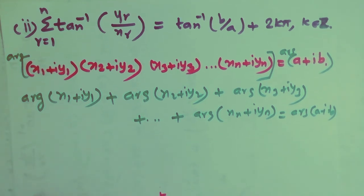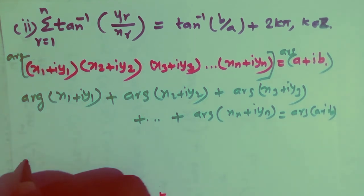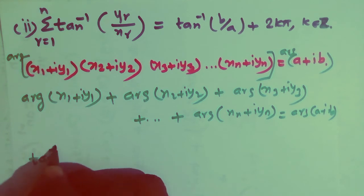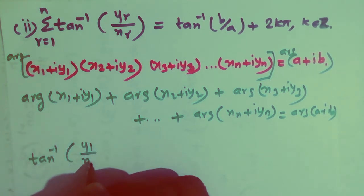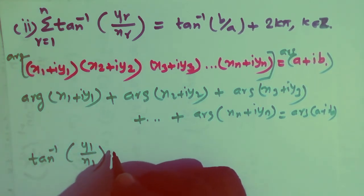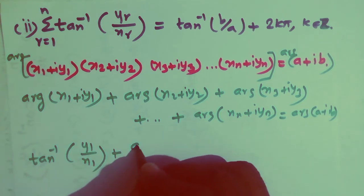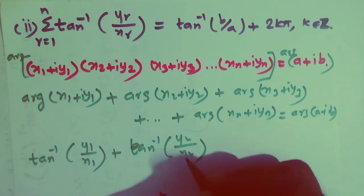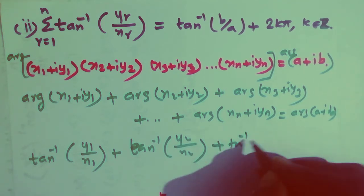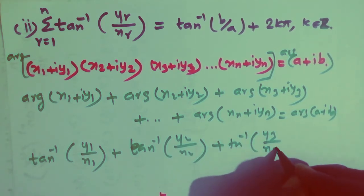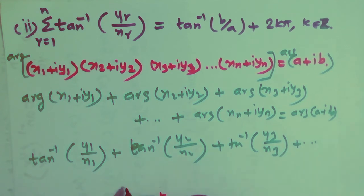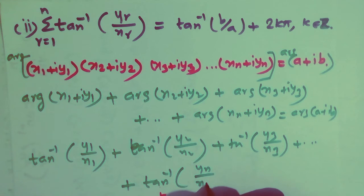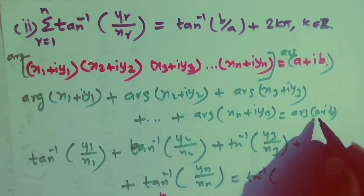Now the argument is the tan inverse. So the argument of (x1 + iy1) is tan⁻¹(y1/x1), which means imaginary part divided by real part. Plus tan⁻¹(y2/x2) plus tan⁻¹(y3/x3) plus and so on plus tan⁻¹(yn/xn) is equal to tan⁻¹ of the right hand side (a + ib).